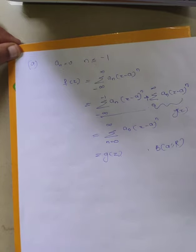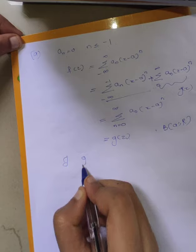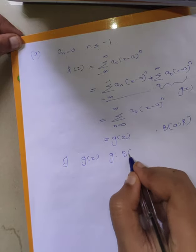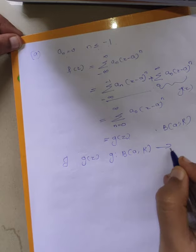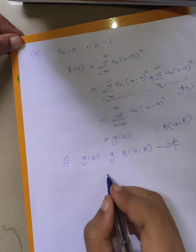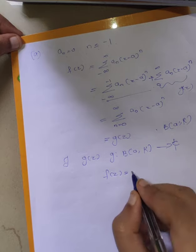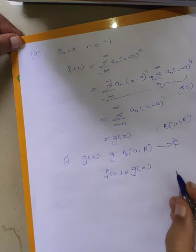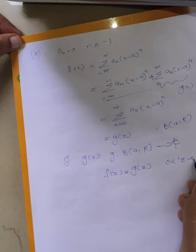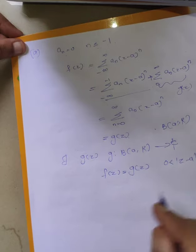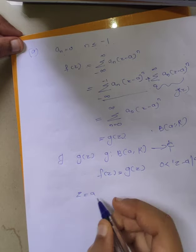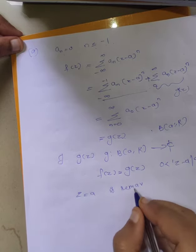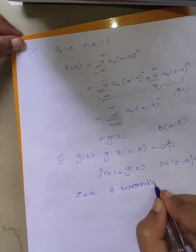We have proven that there exists an analytic function g(z), where g maps B(a,r) to ℂ, such that f(z) equals g(z) for 0 less than modulus of z minus a less than r. This implies that z equal to a is a removable singularity.